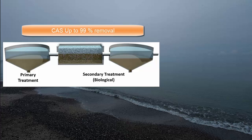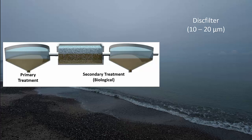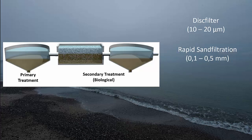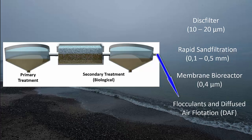This research, which makes it very interesting, is looking at maybe the finest particles you can find in sewage water that has been treated quite some way. After the secondary treatment, they took the water to, in one case, a disc filter, which is a filter with a pore diameter of about 10 to 20 micrometers. They also took water to a rapid sand filtration, which has a sand particle size distribution between 0.1 to 0.5 millimeters. They also tested the water going through a membrane bioreactor, which has a pore size of 0.4 micrometers. Finally, they also took the water from the secondary treatment unit and added flocculants and had a diffused air flotation remove the sludge that was created by the flocculants.